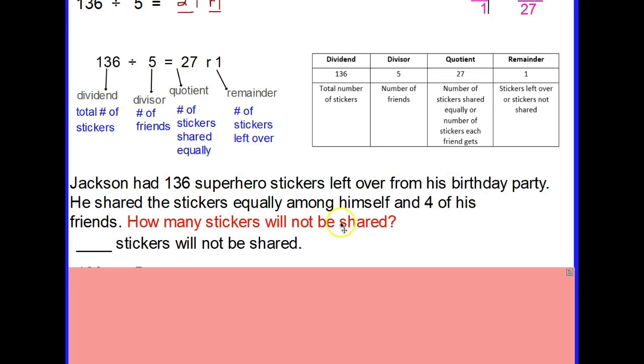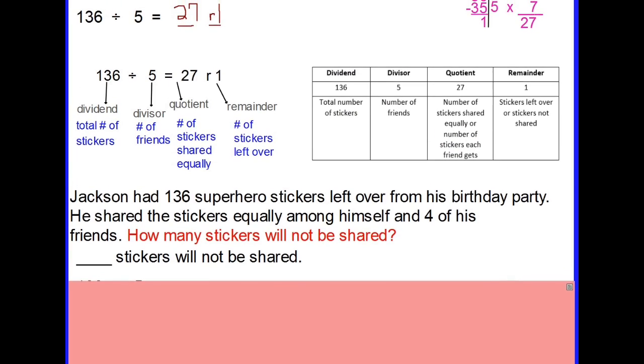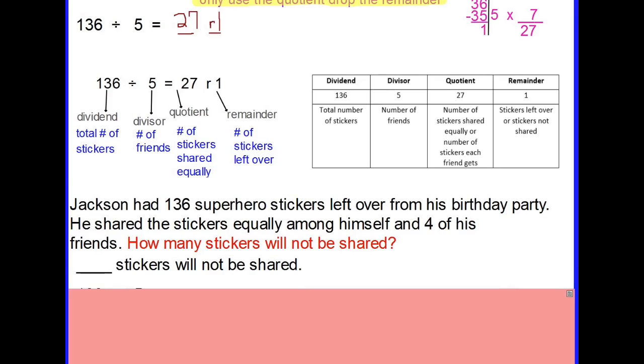Because we've already done the work, we already know that if we're solving for the quotient and remainder it would be 27 remainder 1. But now that we have all of this information we can actually answer this question about the stickers that will not be shared. 136 divided by 5, we've already solved for that and we said it was 27 remainder 1.